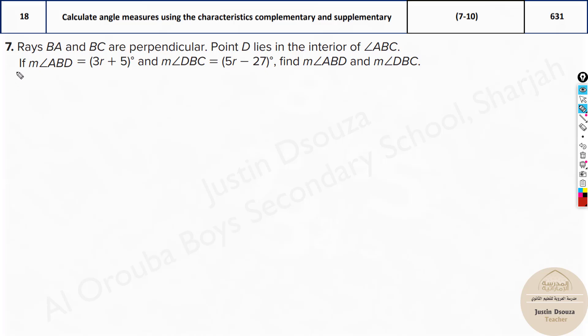Now question 7 is to find the measure of two angles, but they have given the situation to us. No diagrams, only the situation. Rays BA and BC are perpendicular. The point D lies in the interior of angle ABC.